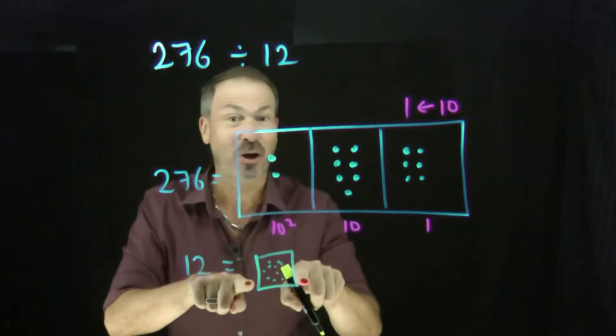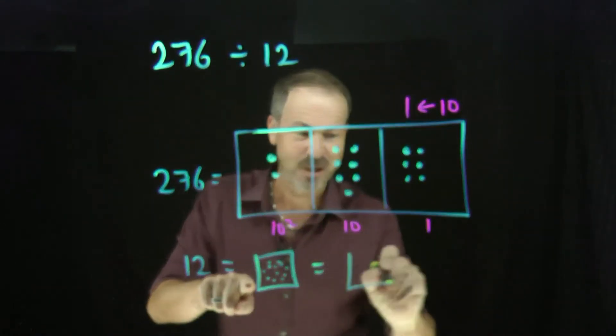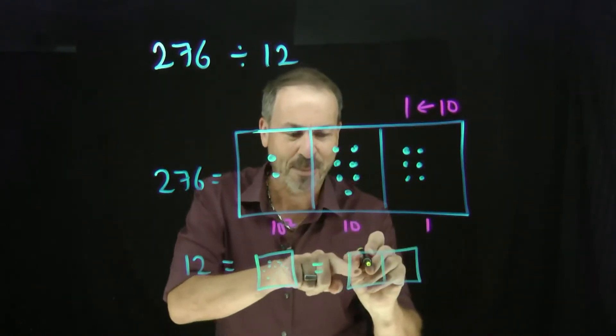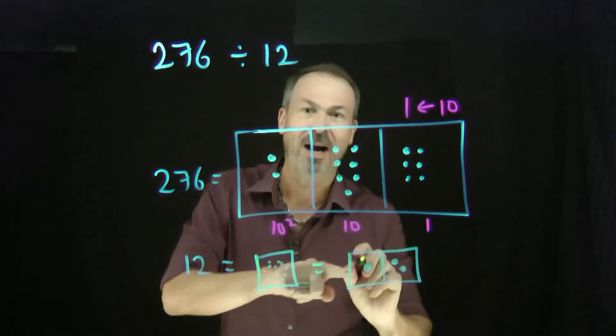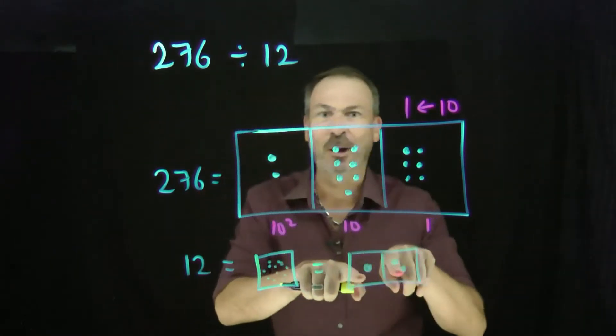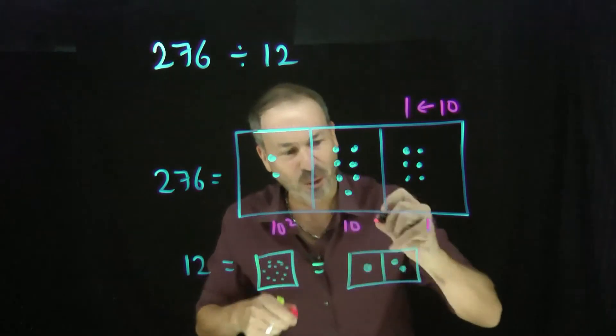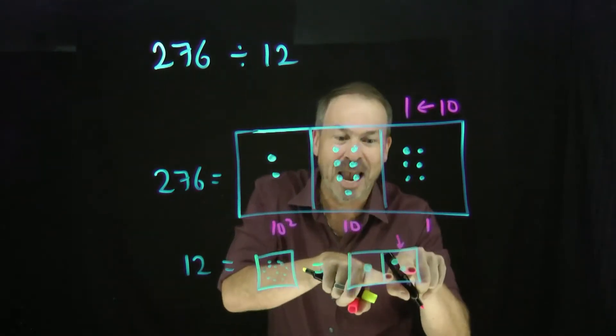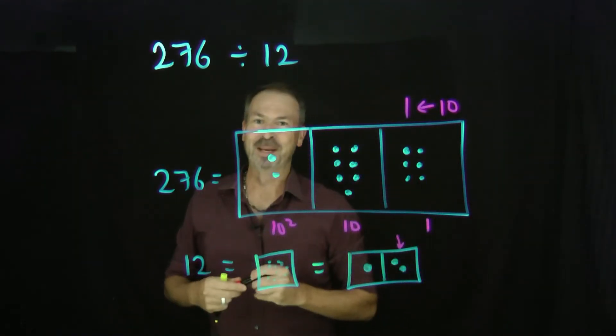But of course in a 10-1 machine we don't like 12 dots in a box. People say, no, no, no, please explode. 10 away. Make one extra dot there, leaving two behind. So 12 really looks like one dot next to two dots. But all 12 dots are sitting right there and kaboom. One spilled over.